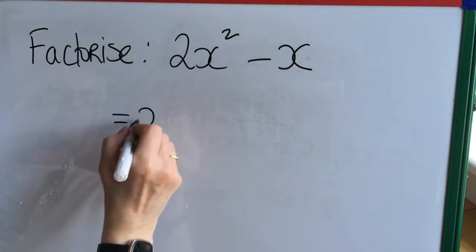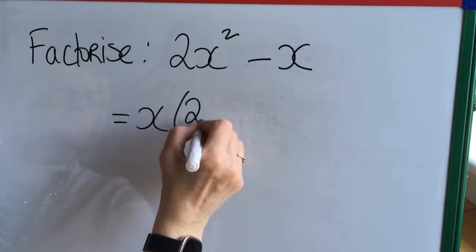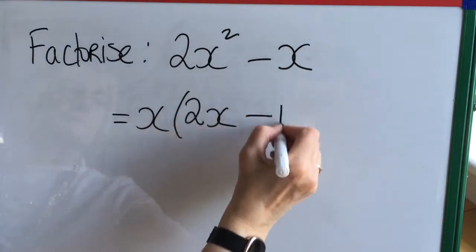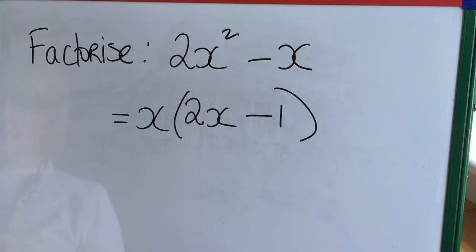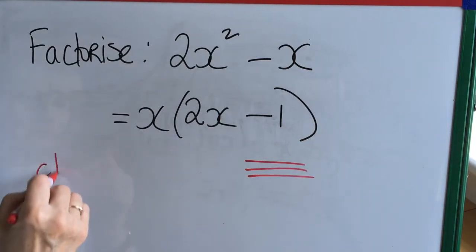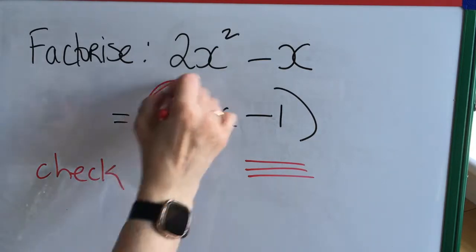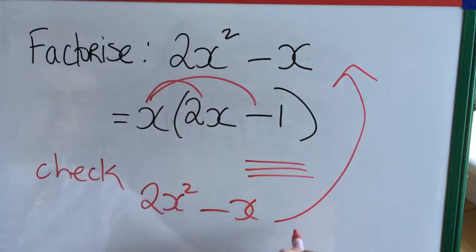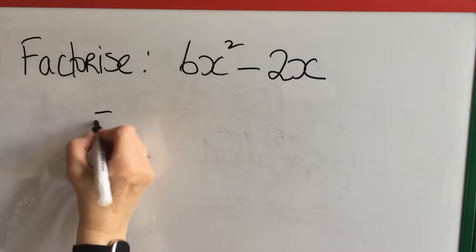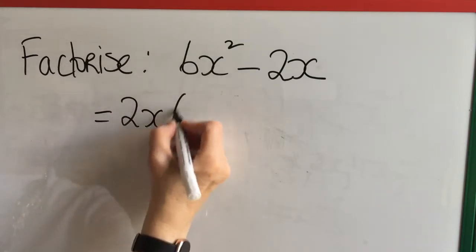Now we've got to be careful with this one because minus x means minus 1x. So when we're dividing we're not going to forget that it's minus 1. So x is one factor and 2x minus 1 is the other factor. And it's a good idea to multiply out your brackets and check your answer.